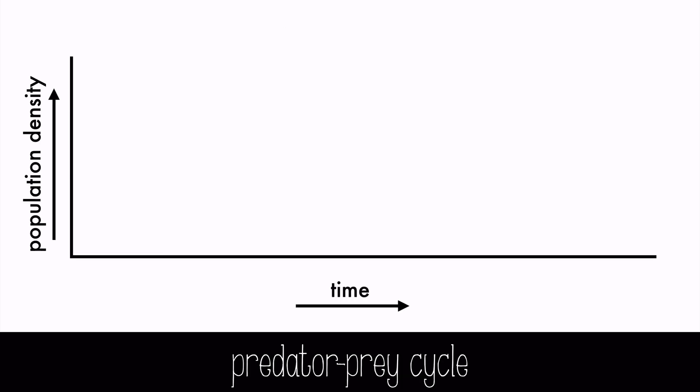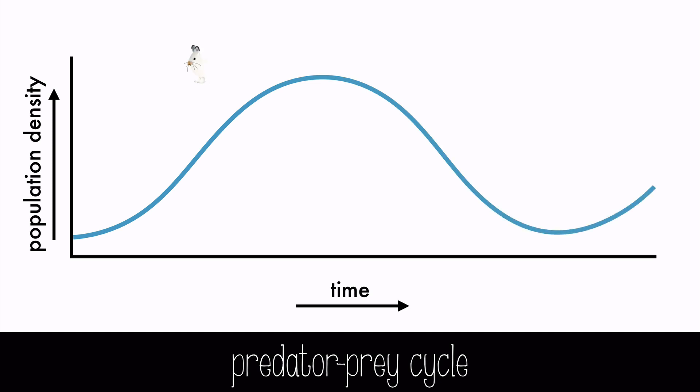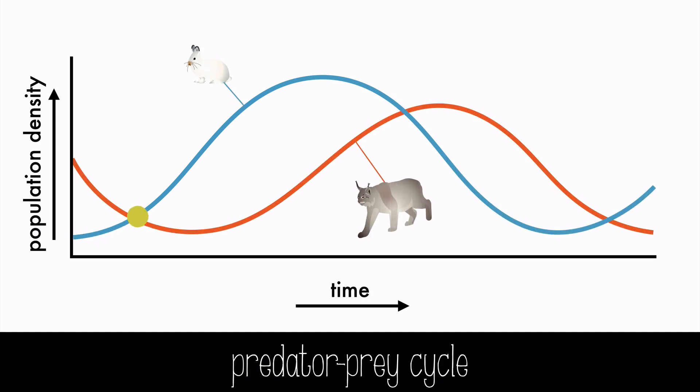Let's look at the interactions between predator and prey over time. As the number of prey increases, the number of predators will follow. But at a certain point, the number of prey available won't support the number of predators hunting them, and the prey population will crash. The predator population, now nearly out of food, will also crash in numbers.